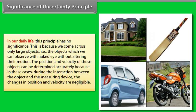In our daily life, this principle has no significance because we come across only large objects — objects which we can observe with the naked eye without altering their motion. The position and velocity of these objects can be determined accurately because, during the interaction between the object and the measuring device, the change in position and velocity are negligible.